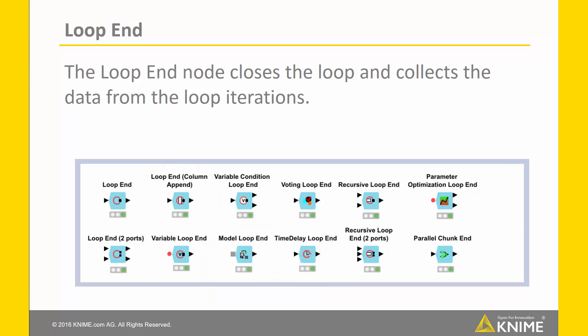A different kind of loop is the parameter loop. Here you see the parameter optimization loop end. Using the parameter loop, you can optimize parameters of various data mining processes.